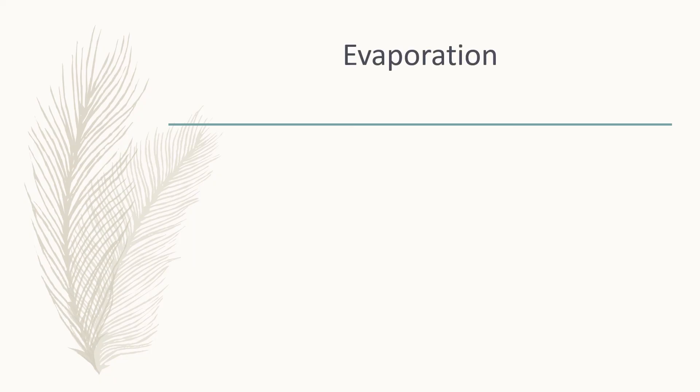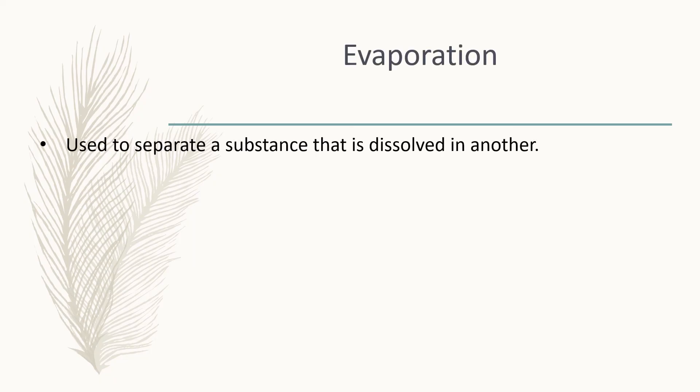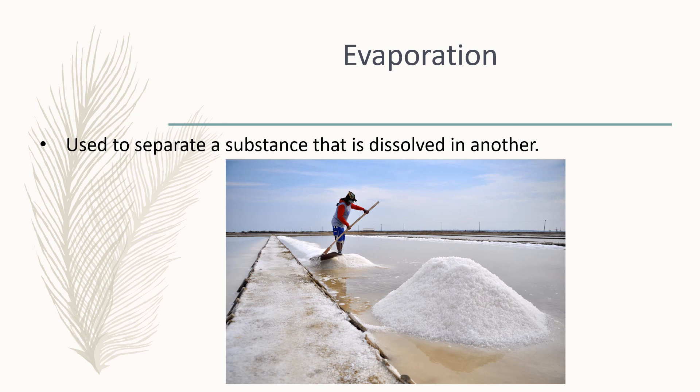The last method of physical separation we will look at is evaporation. Evaporation is used to separate a substance that is dissolved in another. The liquid will evaporate because the bonds between the particles of the liquid are weaker than the bonds between the particles of the solid. After evaporation, the solid will remain behind as crystals. Here we see an example of salt and water and evaporation. And this brings us to the end of our lesson in natural science for today.